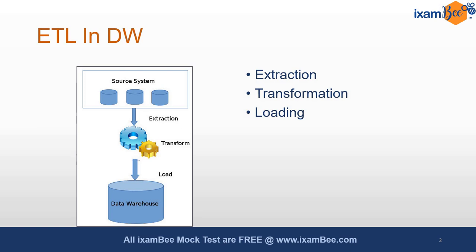Our job is to get insight from that data, and that is very important because the amount of data present in different forms is very difficult to extract information from. For example, we have data in the form of media, videos, text, and images. There are many types of data. So first we need a warehouse — we should have all the data at once, in any format. To get insight from the data we need some methodology. We cannot consume that data as it is; we have to cook that data, and that cooking is done in three steps: extraction, transformation, and loading.